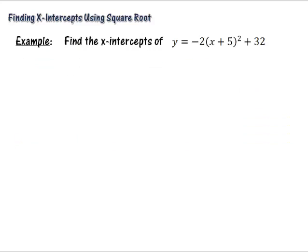So here's our problem. It says find the x-intercepts of y = -2(x + 5)² + 32. So I'm going to put a 0 in for y. That was our first step. And then we want to solve for x.